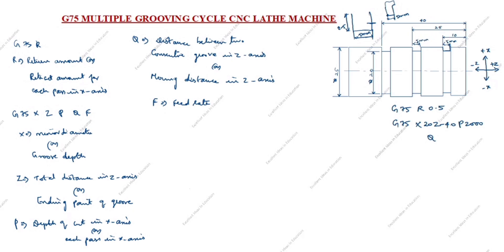You see here this is 25. How much this distance? This distance is 15, 25 minus 10 is 15. Now the tool is here, this is first grooving distance. Second grooving distance is 15, 15mm.